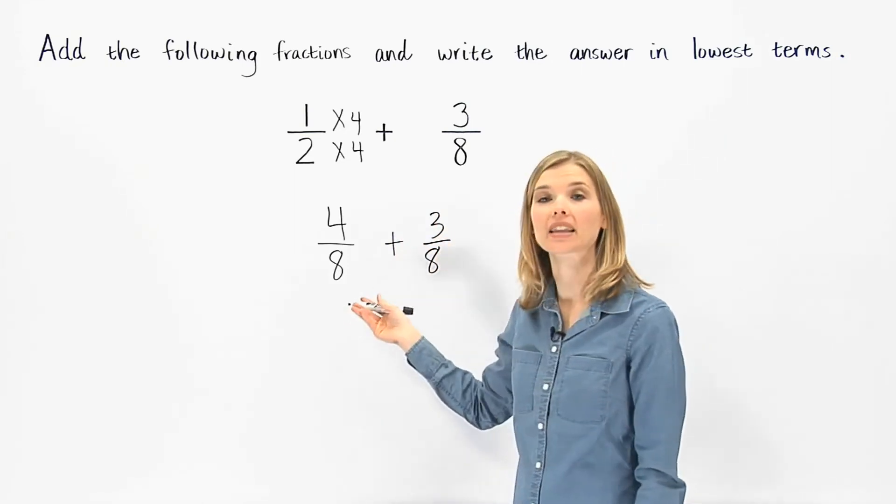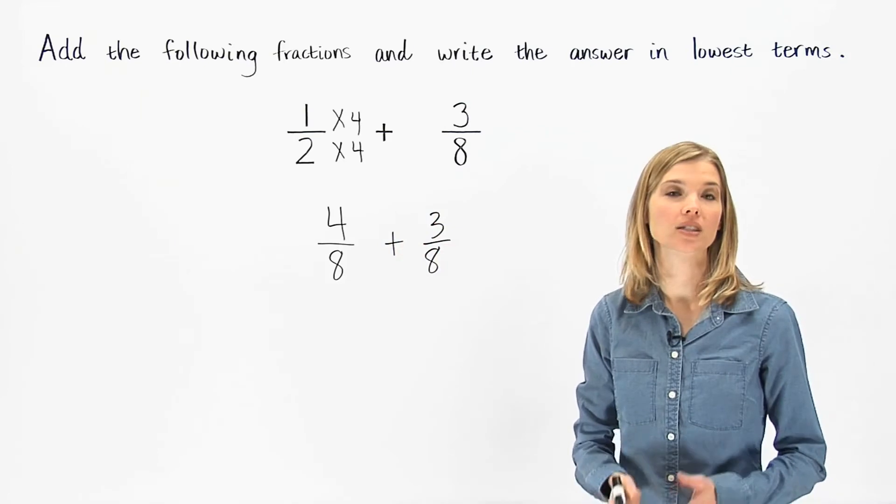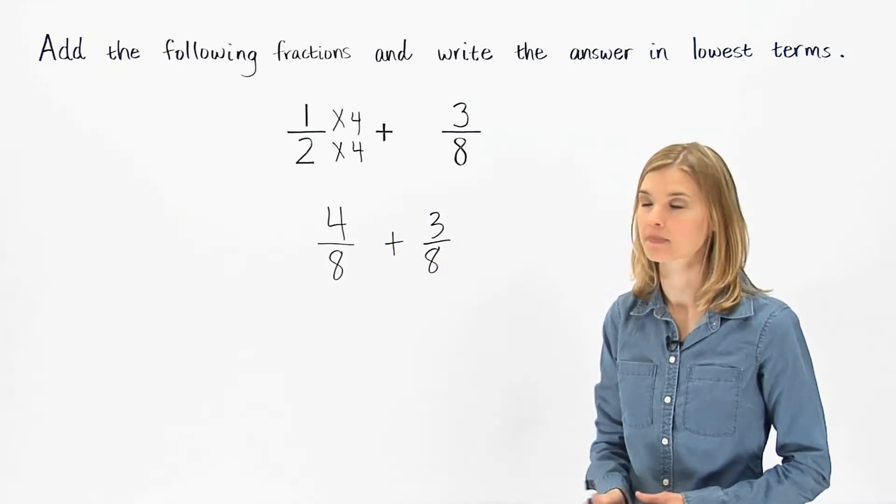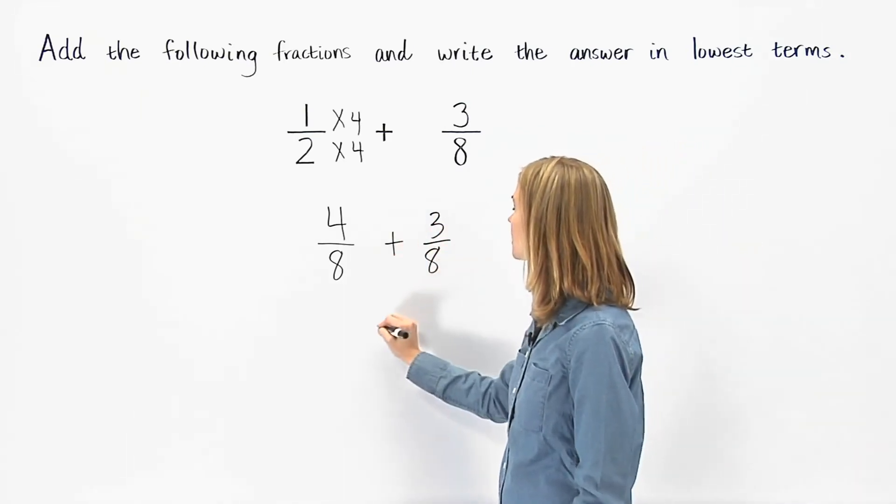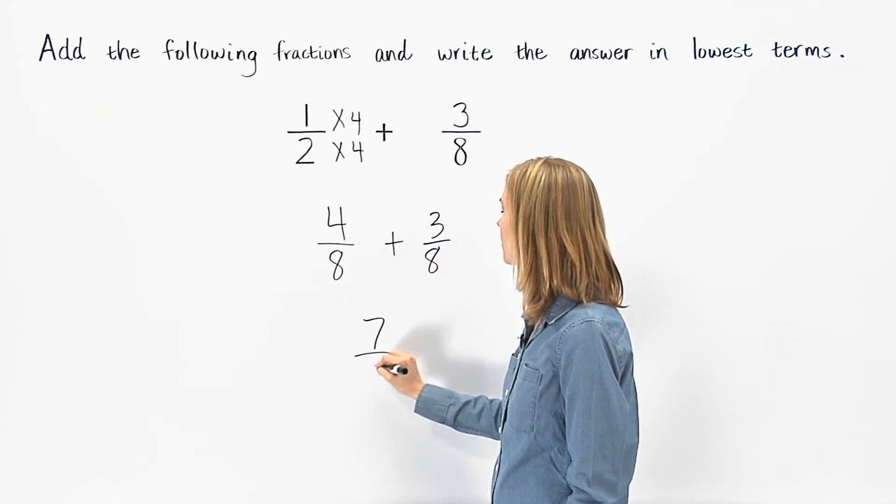Now we're adding like fractions, so we simply add the numerators and keep the denominator the same. 4 plus 3 is 7, and we have 7 eighths.